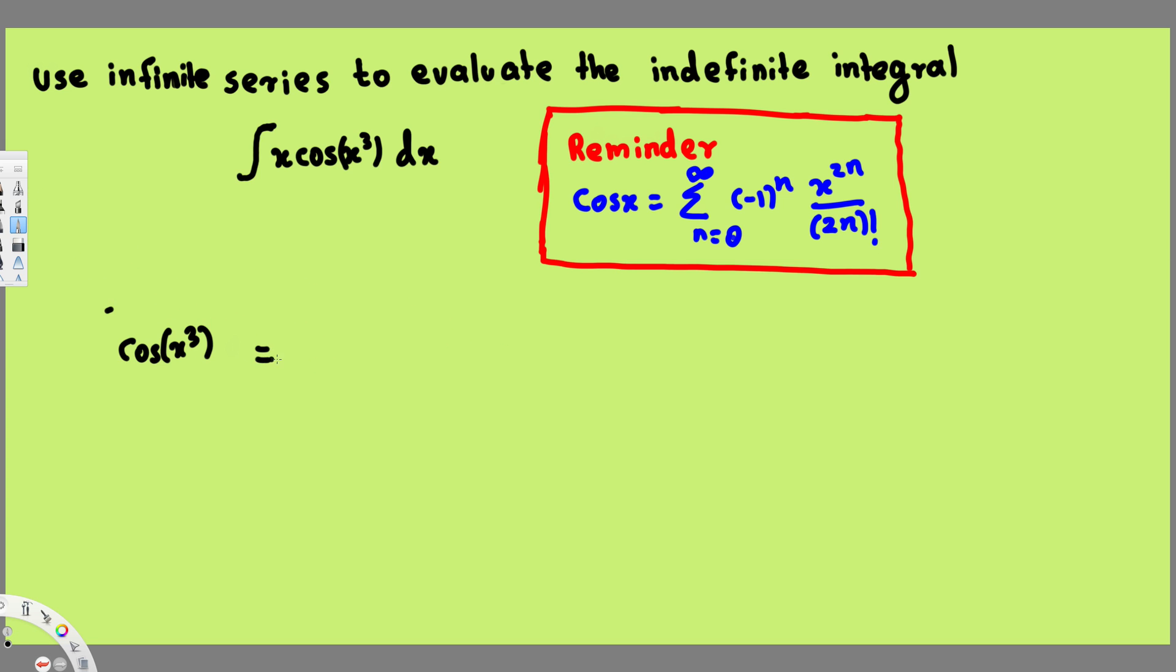First we are going to have summation notation: n equals 0 to infinity, (-1)^n, and here instead of x we are going to plug x³. So that's the one that's going to change.